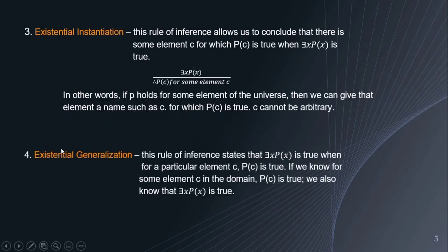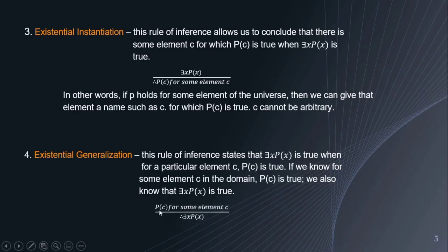Next, we have existential generalization. This rule of inference states that there exists x, P(x) is true when, for a particular element c, P(c) is true. If we know for some element c in the domain that P(c) is true, we also know that there exists x, P(x) is true. This is how it looks like: P(c) for some element c is true; therefore, there exists x, P(x) must also be true.